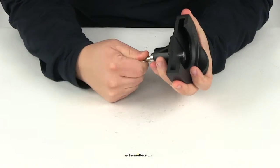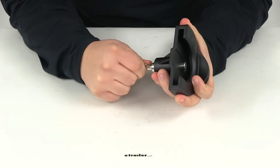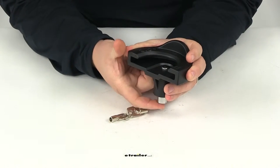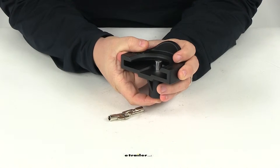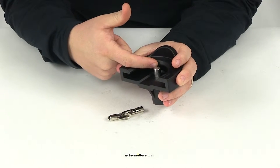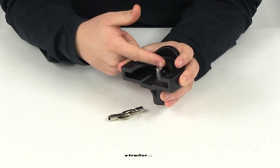you don't even have to have the key installed in order to lock it back in place. All you have to do is push this up. This goes around the inside lip of that socket where your hitch ball goes.